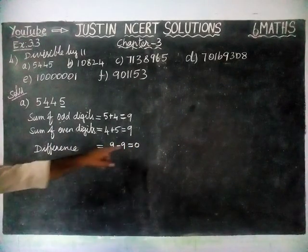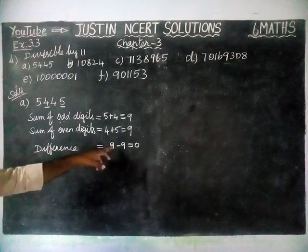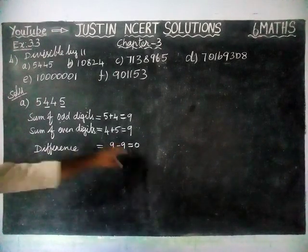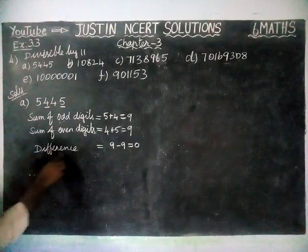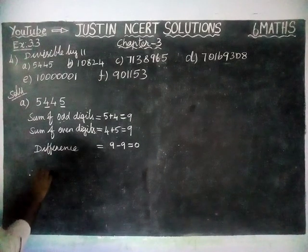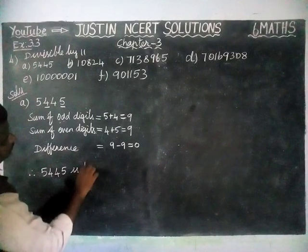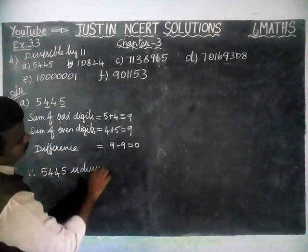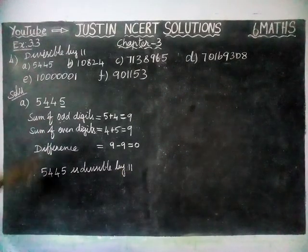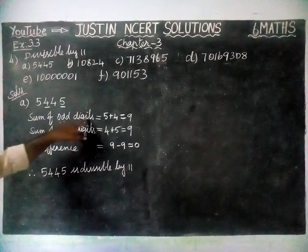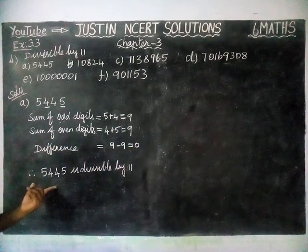If the difference is 0 or divisible by 11, that number is divisible by 11. Here we are getting a difference of 0. Therefore, the given number 5445 is divisible by 11.